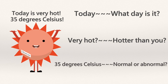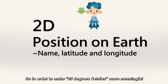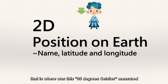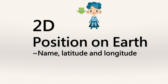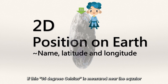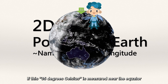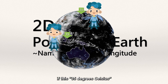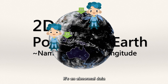Is it normal or abnormal? So in order to make 35 degrees Celsius more meaningful, the first feature added is 2D — that is, where was this 35 degrees Celsius measured? If this 35 degrees Celsius is measured near the equator, then it is normal data. On the contrary, if this 35 degrees Celsius is measured close to the North Pole, it's abnormal data.